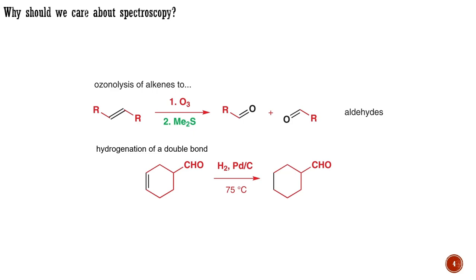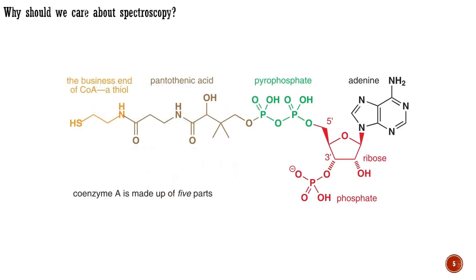After considering all the available chemical evidence, the chemist proposed a candidate structure or structures consistent with the observations. Proof of structure was provided either by converting the substance to some already known compound or by an independent synthesis. These procedures are not sufficient, however, for complex compounds that have never been synthesized and characterized. They are also impractical with compounds that are difficult to obtain, because a relatively large sample is required to complete the elemental analysis and all the functional group tests.